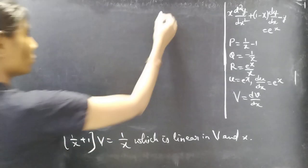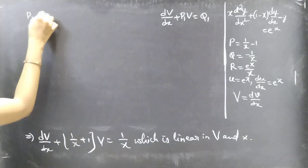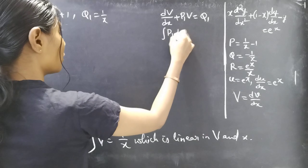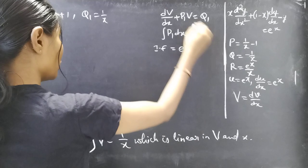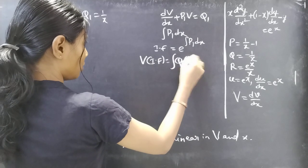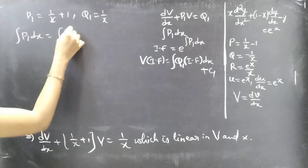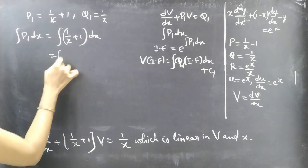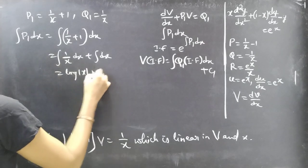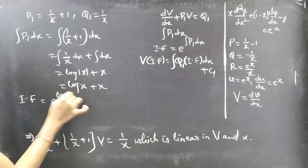Compare this with the standard form dV/dx + P₁·V = Q₁. By comparison, P₁ = 1/x + 1 and Q₁ = 1/x. Now find the integrating factor: first compute ∫P₁ dx = ∫(1/x + 1) dx = ∫(1/x) dx + ∫dx = log|x| + x.